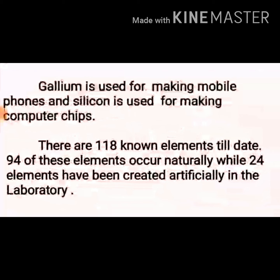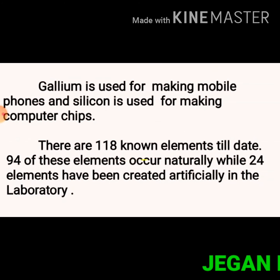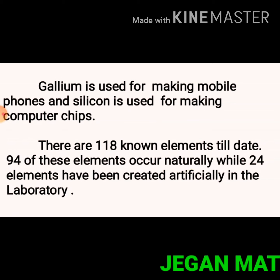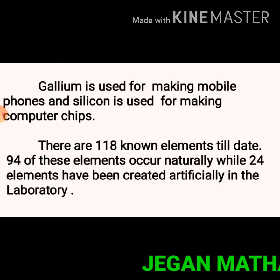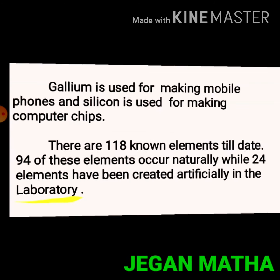Sulfur is used as manure in agriculture, gallium is used for making mobile phones, and silicon is used for making computer chips. There are 118 known elements to date — 94 of these elements occur naturally, while 24 elements have been created artificially in the laboratory.